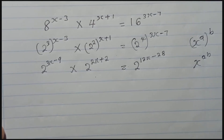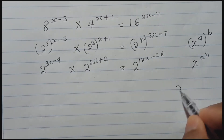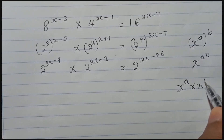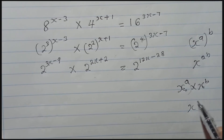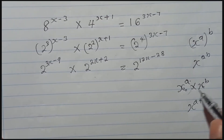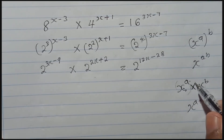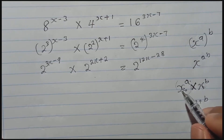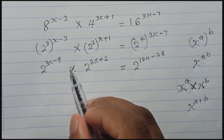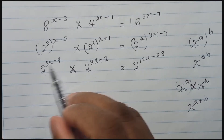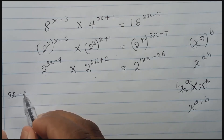Now we are done with that part. The next indices rule: if you have x^a times x^b — same base, multiplication — we can add the indices: a plus b. When you have the same base and multiplication between two powers, you add the two indices. We can apply that same rule here, since we have base 2 in both cases with multiplication.